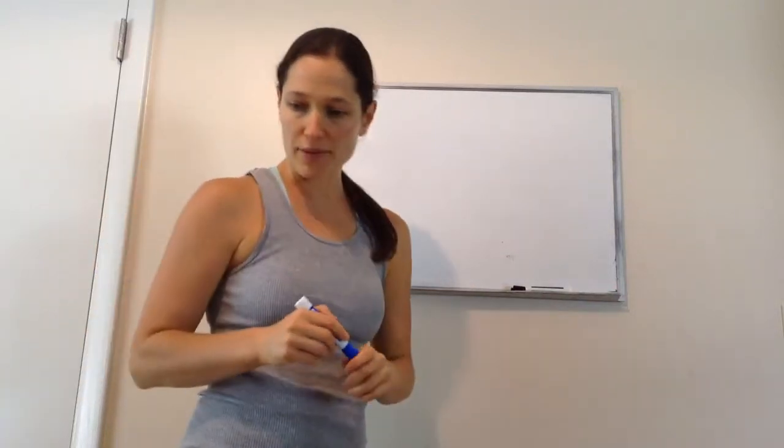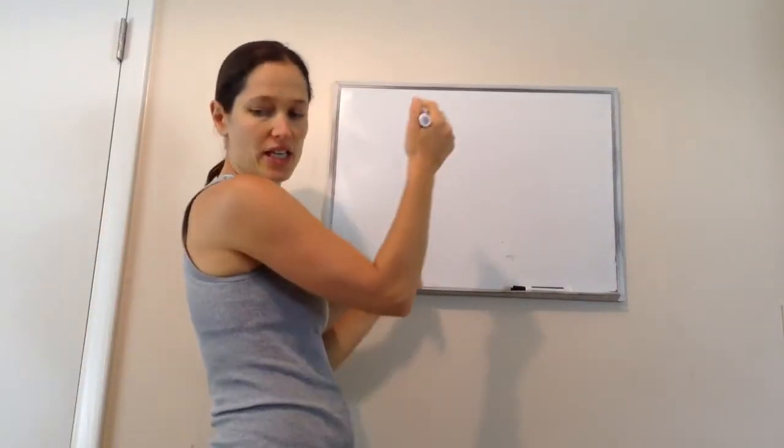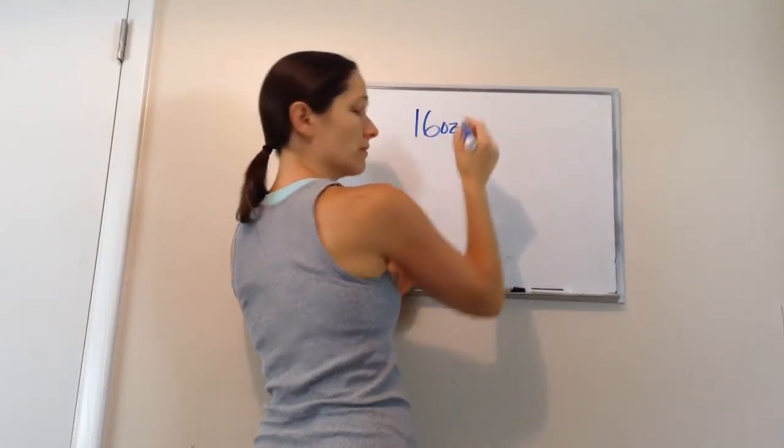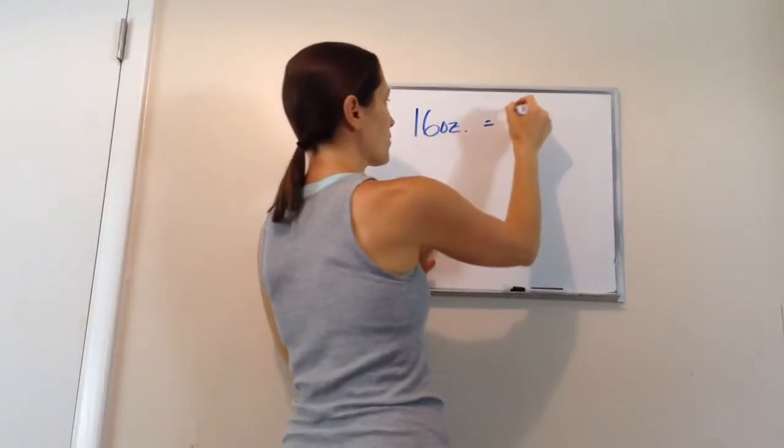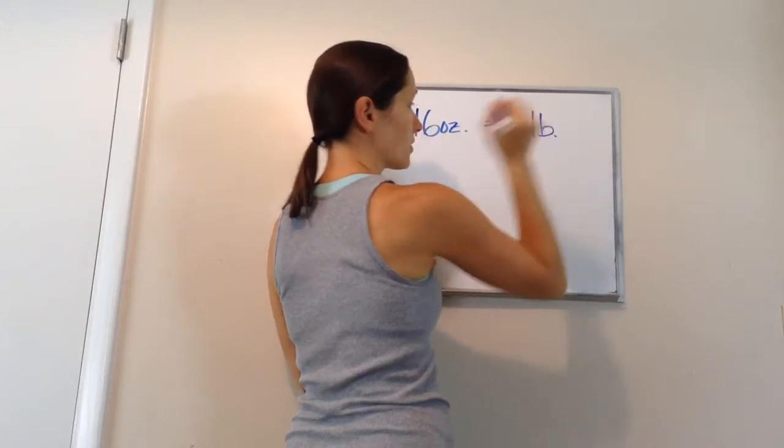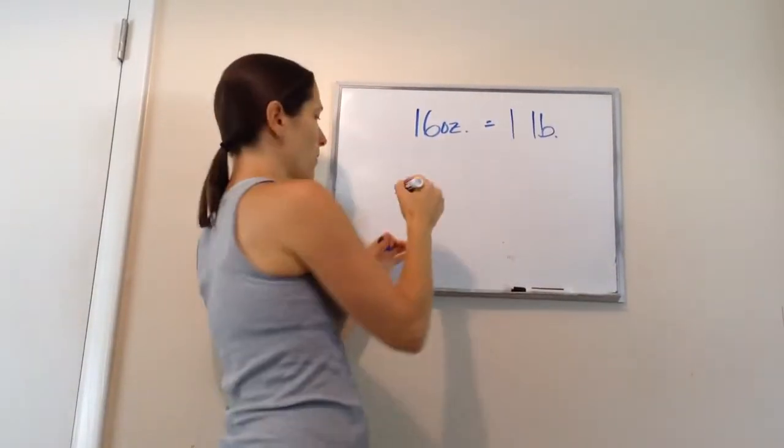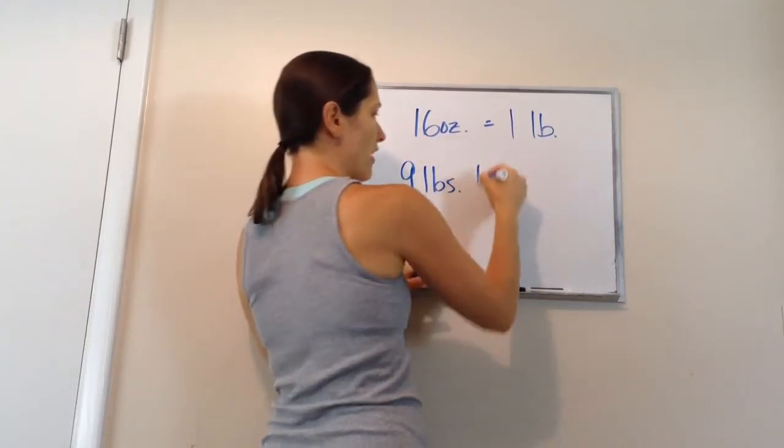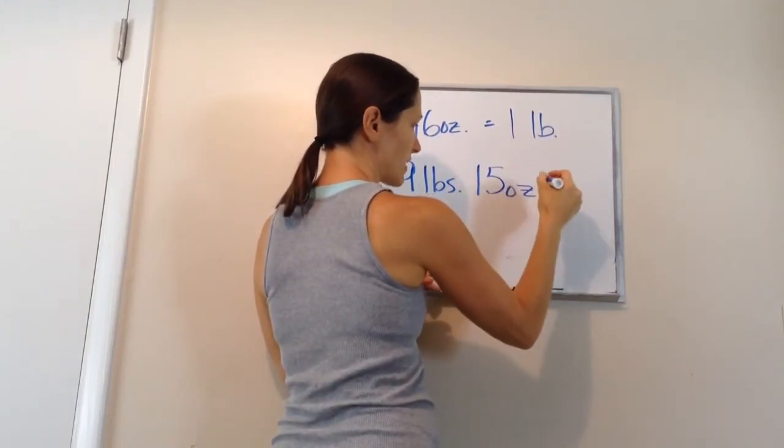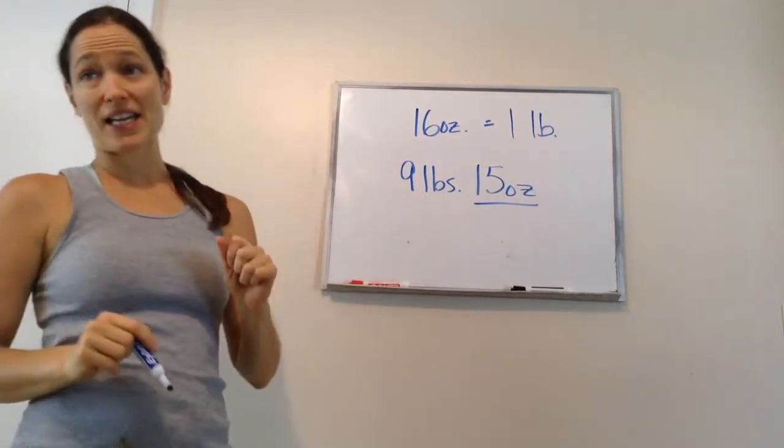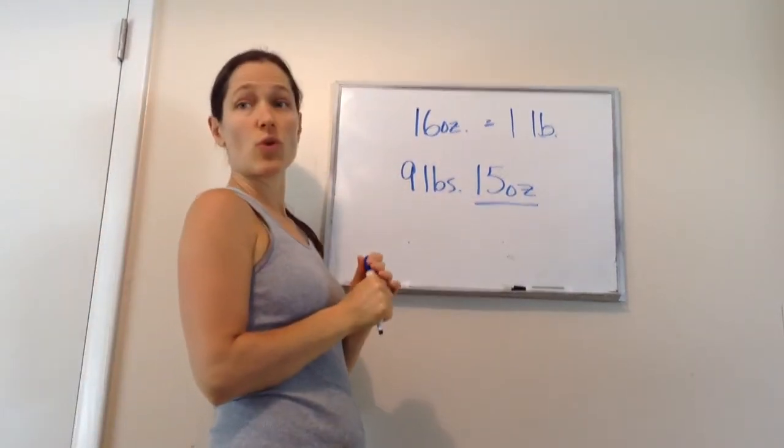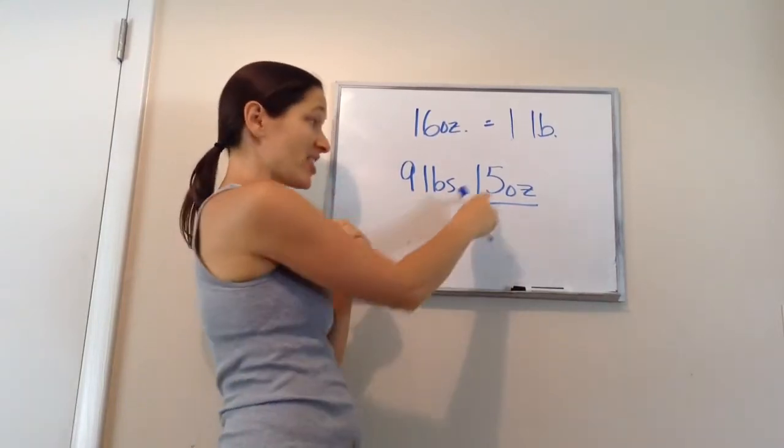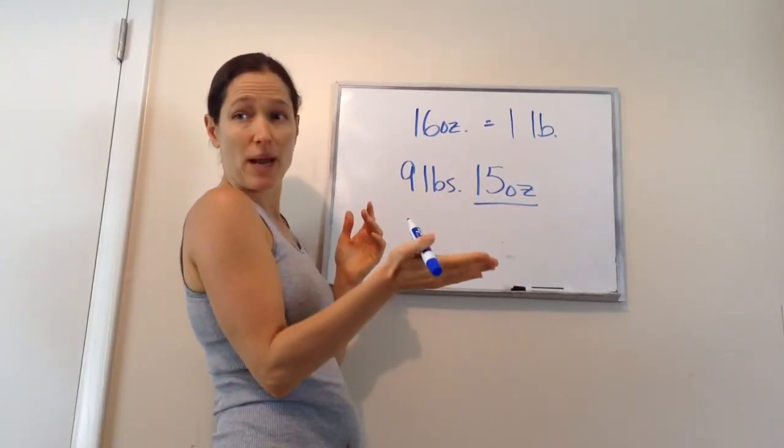Let's write down a few units of weight that are in the customary system. Write this down on your paper. 16 ounces equals 1 pound. So, one of my sons was born, and he was 9 pounds, 15 ounces. How much more did he need to be to equal 1 more pound? Instead of 9 pounds to equal 10. One ounce. He just needed 1 more ounce, which is like a paper clip. He needed 1 more paper clip to weigh 10 pounds.